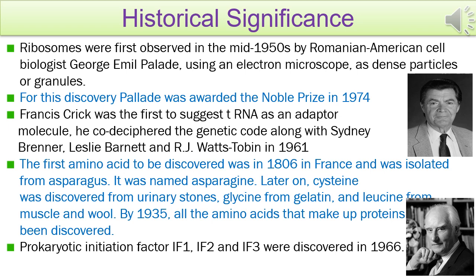We know that there are 20 amino acids in our body which are considered essential and all proteins are made up of these 20 building blocks. The first amino acid to be discovered was in the year 1806 in France and it was isolated from asparagus, thus it was named asparagine. Later on, cysteine was isolated from urinary stones, glycine from gelatin, and leucine from muscle and wool. By the year 1935, all the amino acids that make up proteins had been discovered. The initiation factors IF1, IF2, and IF3 were also discovered by the year 1966.